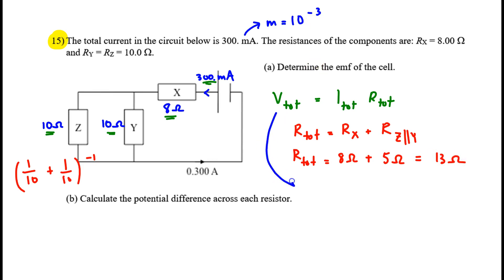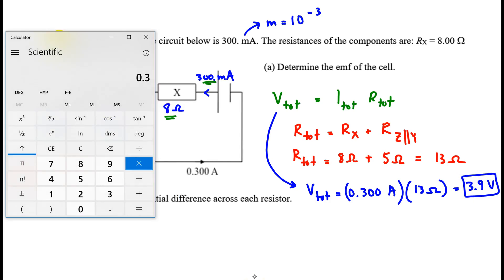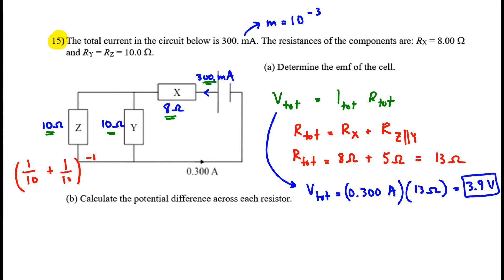Now we can plug back in. The current total is 0.300 amps. We multiply by total R, which is 13 ohms. And 3 times 13 is 39. So this is going to be 3.9 volts. Let's confirm that. Good.